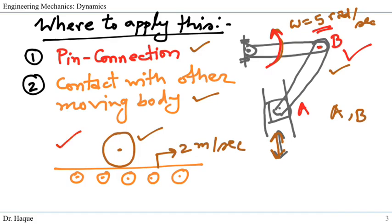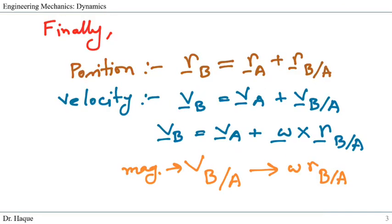Here, for example, for contact with other moving body, the problem says this conveyor belt is moving 2 meter per second and it is asking for your velocity at point A. So where would I take point B? Yes, we should take the point B at the contact point because this contact point can relate our problem with the given value.